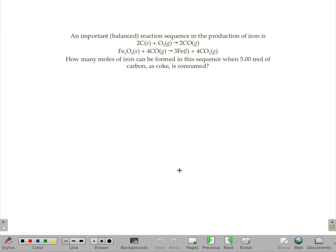An important reaction in the production of iron is this two-step sequence: carbon and oxygen making carbon monoxide, then iron oxide and that carbon monoxide making iron and CO2. We want to know how much iron can be formed in this sequence if you start with just five moles of carbon.